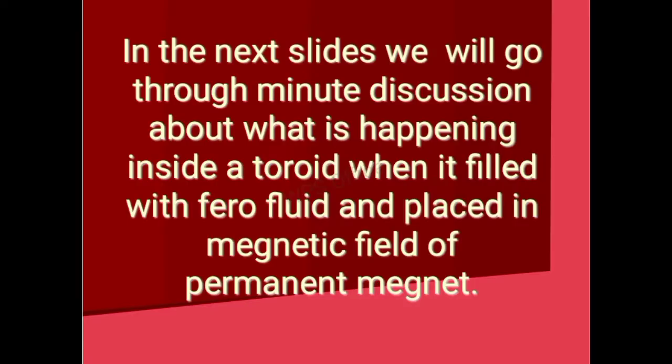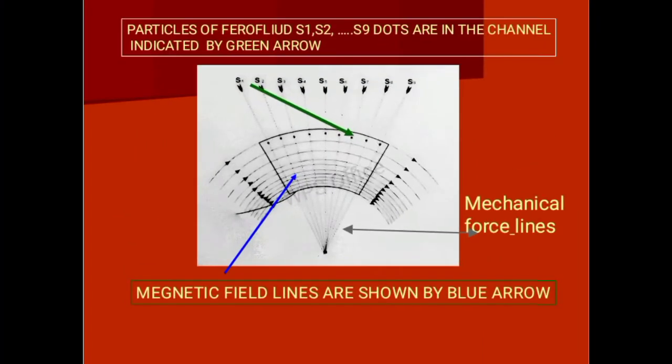In the next slides we will go through a detailed discussion about what is happening inside a toroid when it is filled with ferrofluid and placed in the magnetic field of a permanent magnet. This is a toroidal magnetic field; field intensity increases near the center.